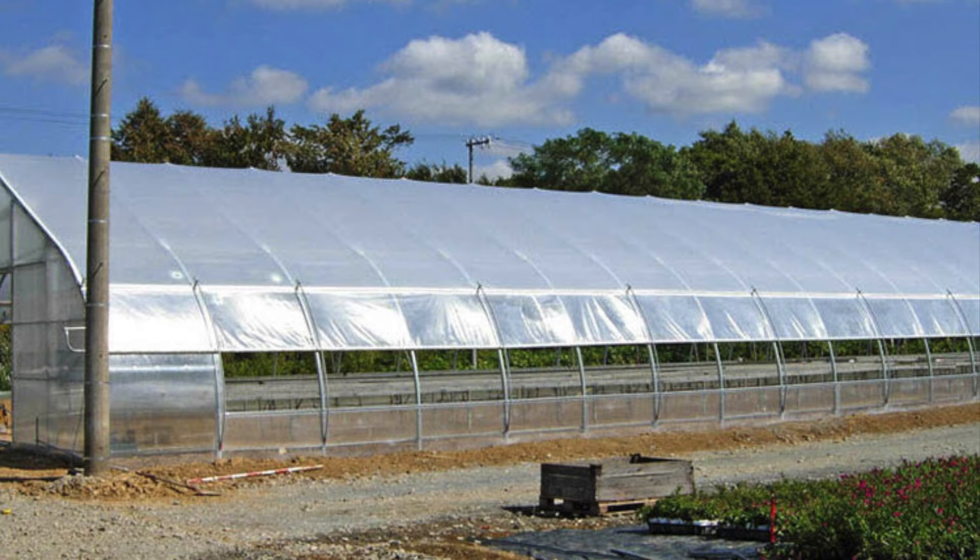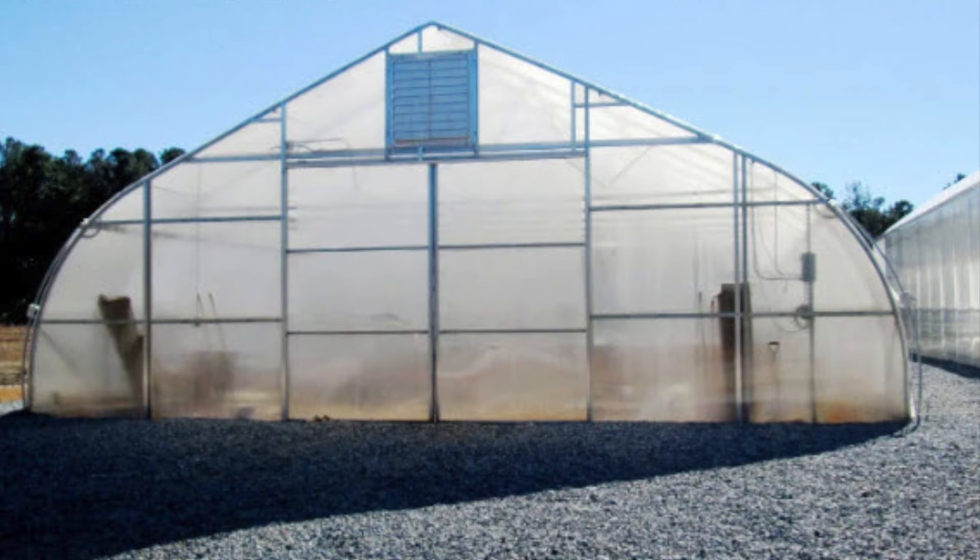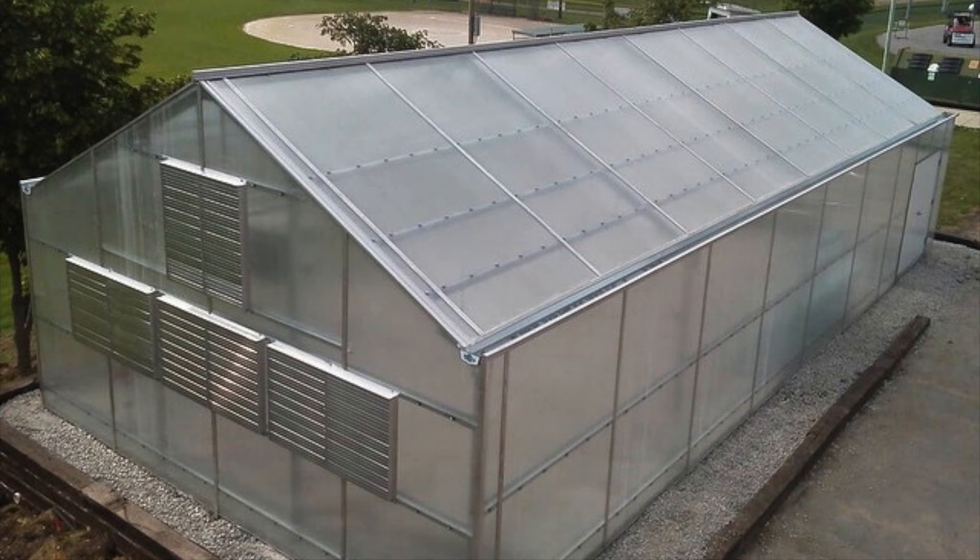For a hoop house, most will ventilate the end walls with a door or window and roll up the covering on the sides to allow for massive airflow to come through. Some heat can still get trapped at the top, but the vents on the end walls up high usually disperse this.